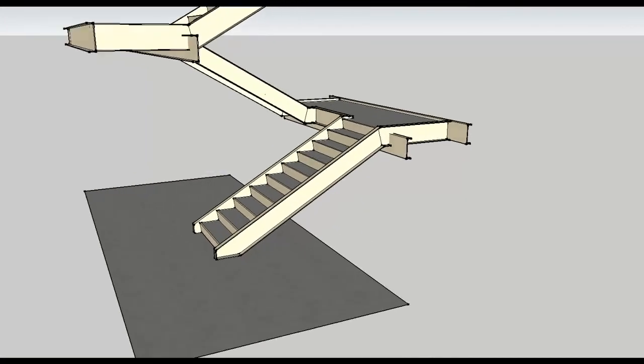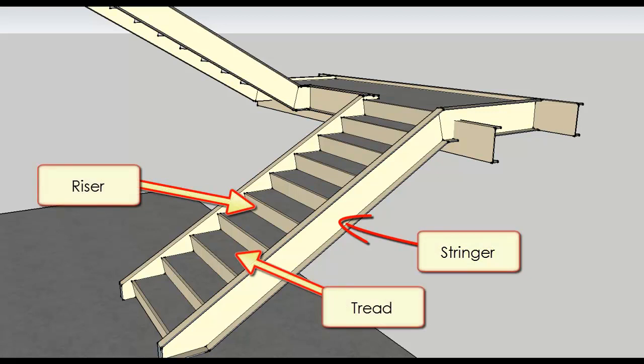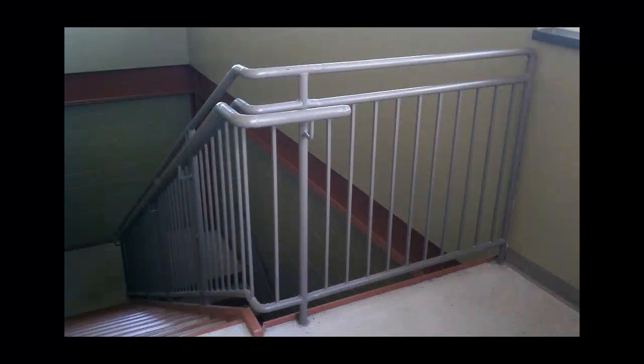The general makeup of metal stairs is no different from any other stair system. They still incorporate stringers to support the treads and risers, and railings for fall protection and handholds. We'll get into code requirements related to these elements in a minute.